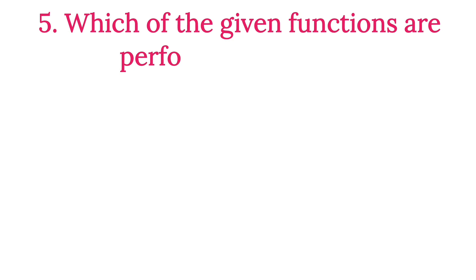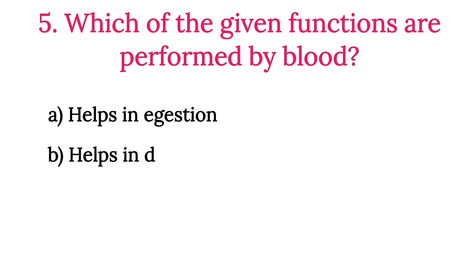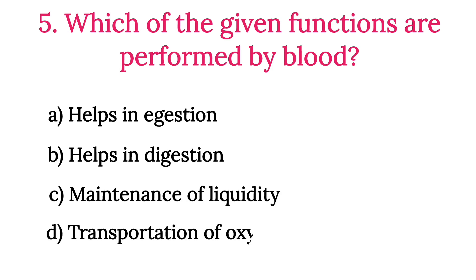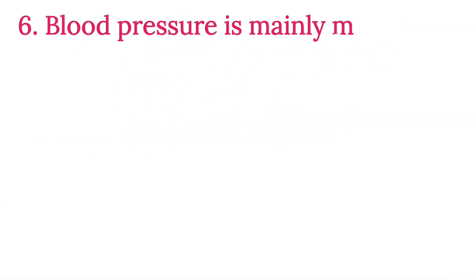MCQ Number 5: Which of the given functions are performed by blood? Option A: Help in ingestion. Option B: Help in digestion. Option C: Maintenance of liquidity. Option D: Transportation of oxygen to all parts of the body. So the correct option is Option D.